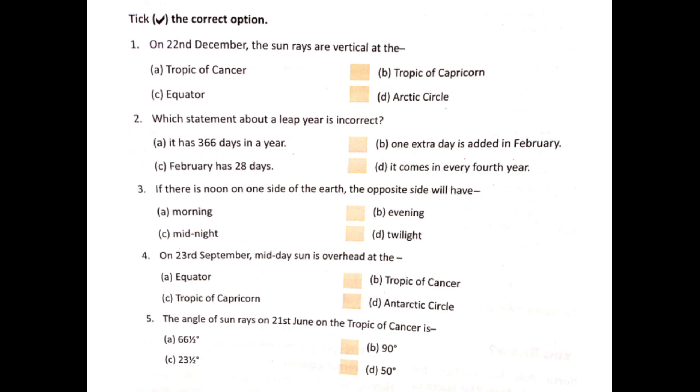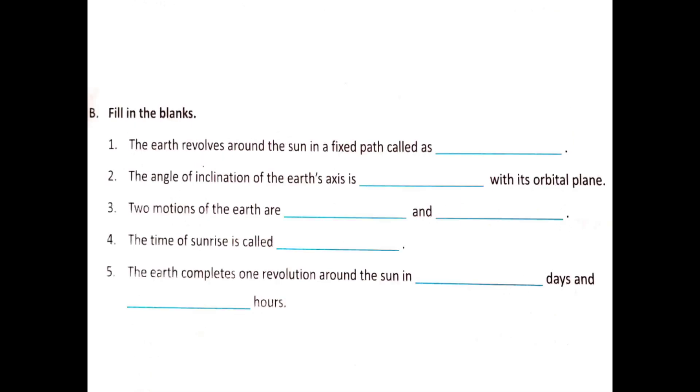Fill in the blanks. The Earth revolves around the sun in a fixed path called orbit.